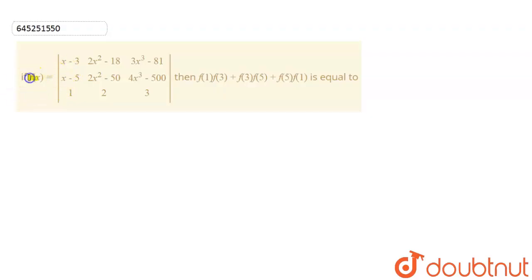So this is the question. If f of x is equal to x minus 3, 2x square minus 18, 3x cube minus 81, x minus 5, 2x square minus 50, 4x cube minus 500, 1, 2, 3. Then f of 1 into f of 3 plus f of 3 into f of 5 plus f of 5 into f of 1 is equal to.